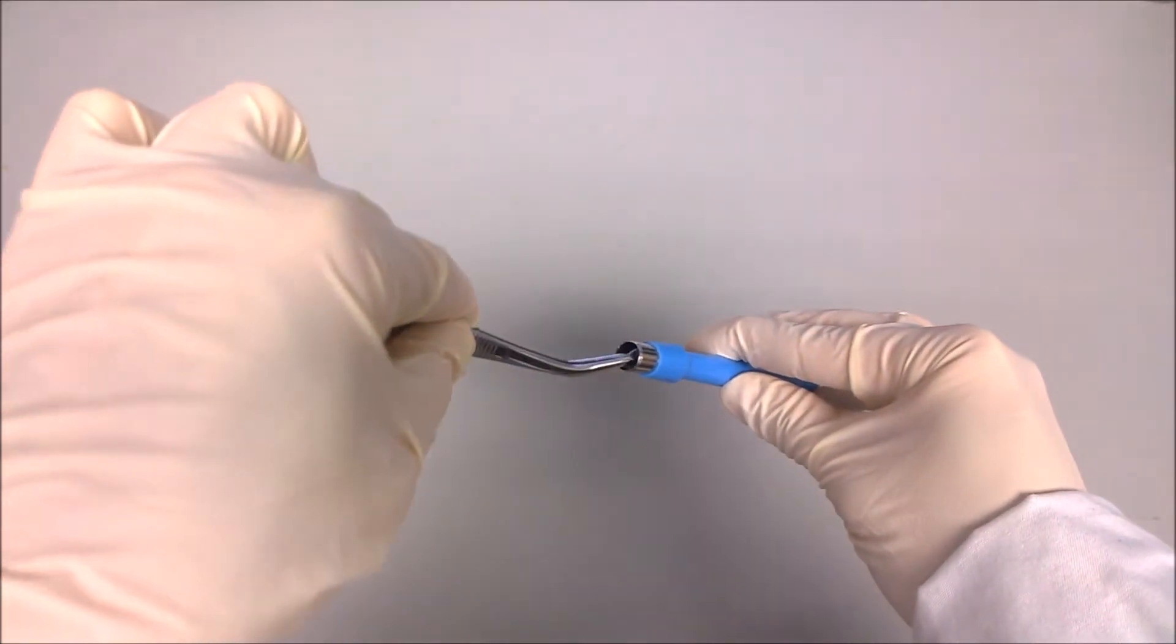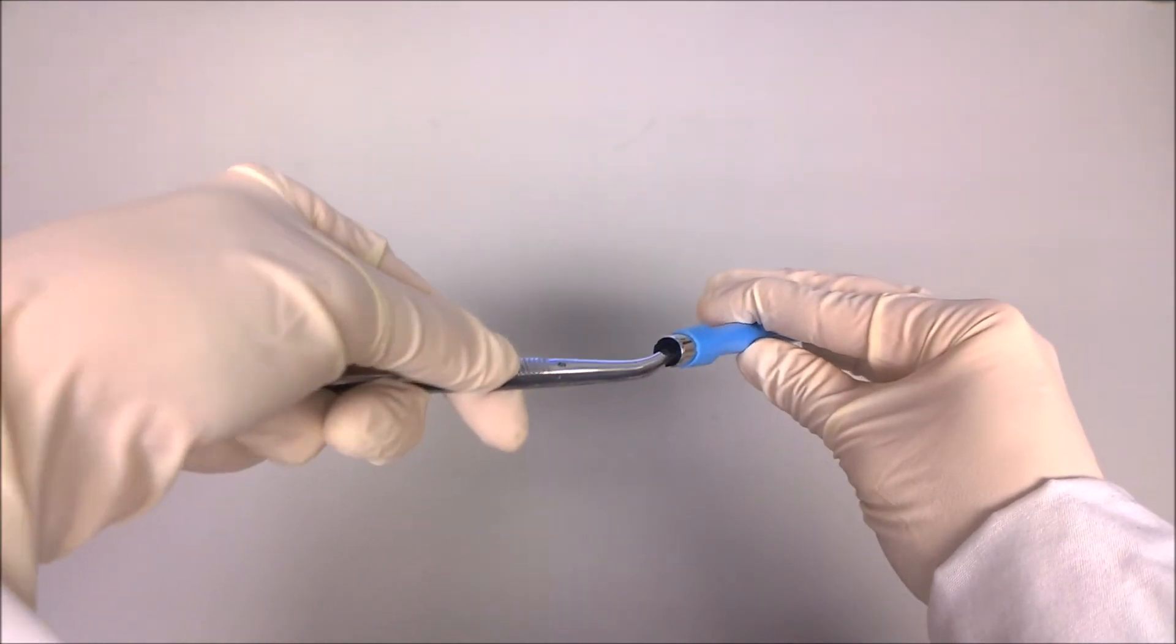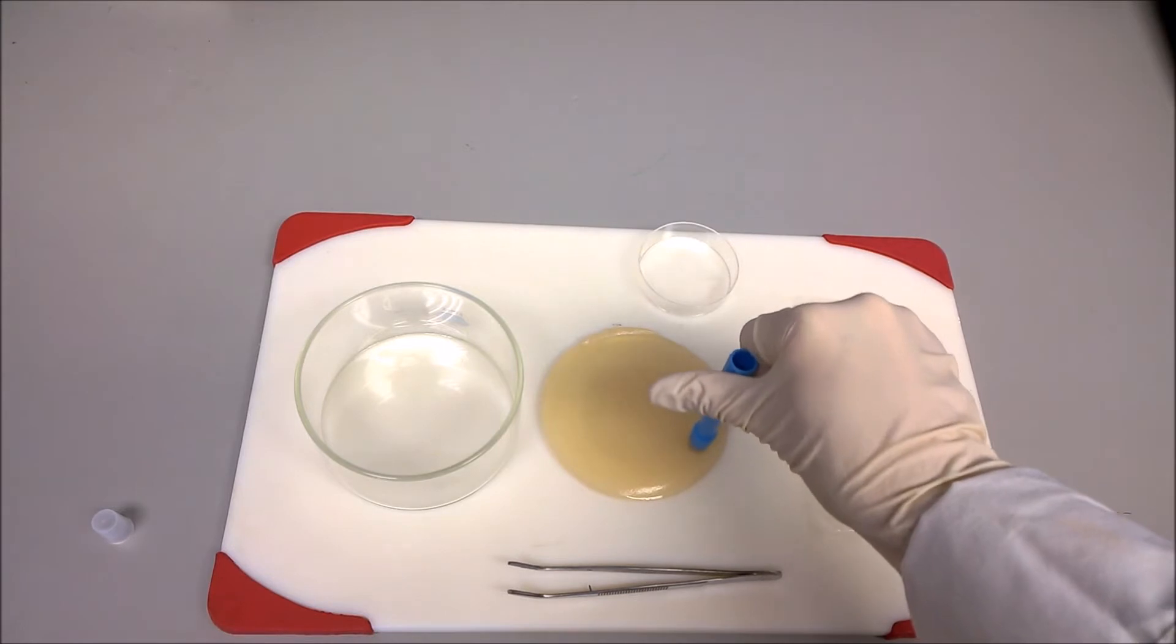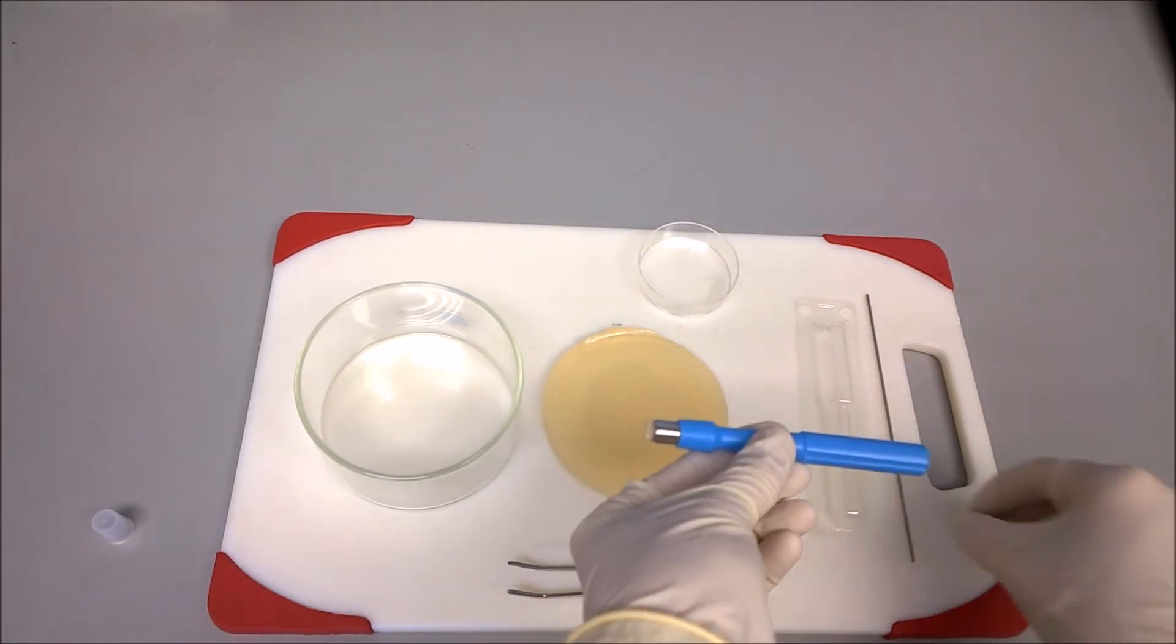Ensure that the plastic disc is inside the biopsy punch and then punch the hydrogel. Carefully use the metal rod to help release the disc.